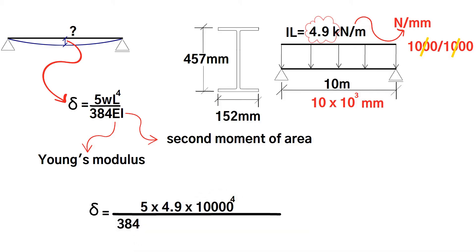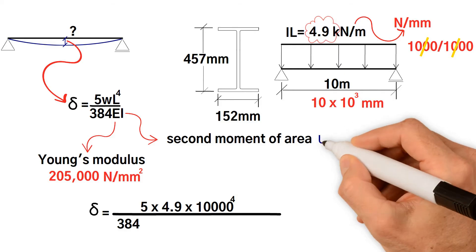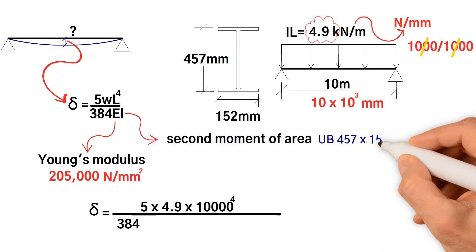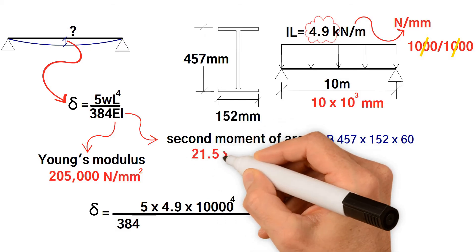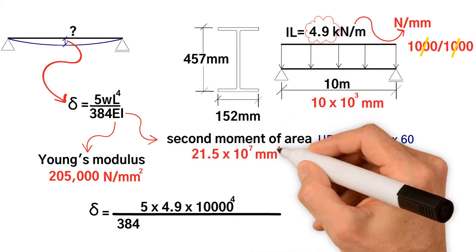We know the value of Young's modulus for steel is 205 times 10 to 3 newton per square millimeter. Then for the I value, second moment of area for UB section 457 by 152, we find that from steel sections table. It's 21.5 times 10 to the 7 millimeter to the 4.